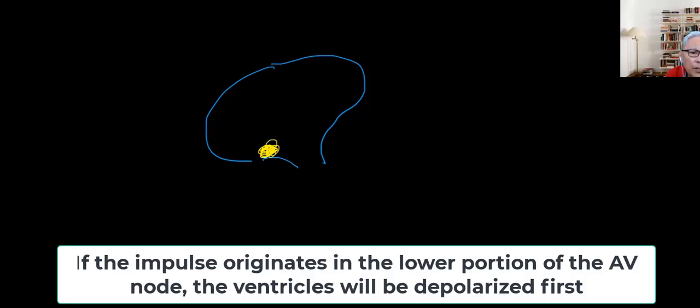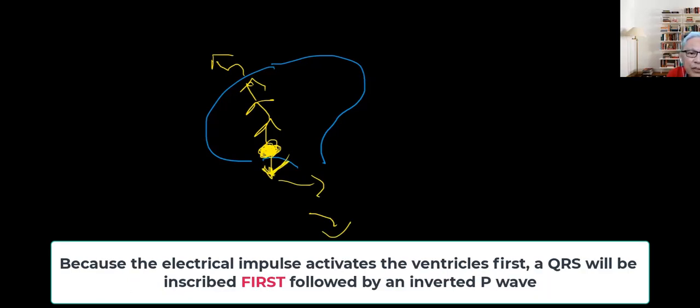Again, if this is the AV node and this is the bundle branch or the bundle of His, there's also a possibility that an impulse could come from the AV node but on the lower region. So now again, the spark is created and it's going to move this way. What is going to be activated first, the atria or the ventricles? The ventricle.